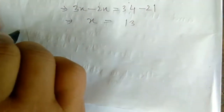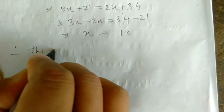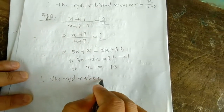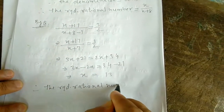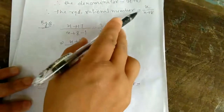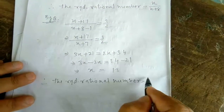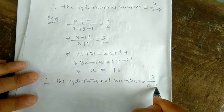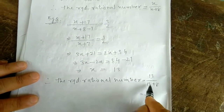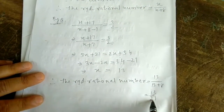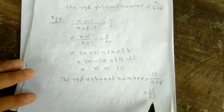Therefore the required rational number equals x by (x + 8). Substituting x = 13: 13 by (13 + 8) = 13 by 21. So the rational number is 13/21.